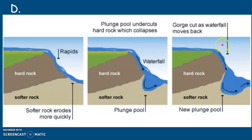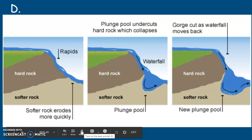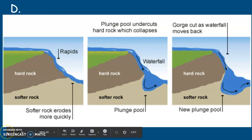Next we have the diagram of a waterfall, which I'll draw with you in a separate video. If you were looking for waterfalls on a map, they are usually named, so you'd follow the river and look for an area where contour lines come very close together, usually in the upper course. Stay tuned for instructions on how to draw the diagram of a waterfall.